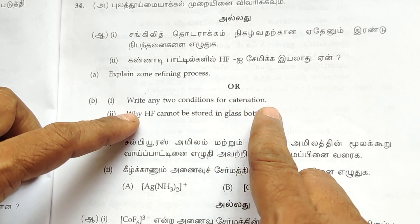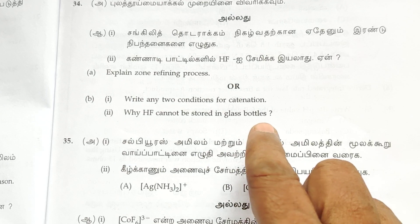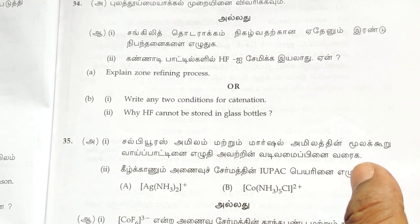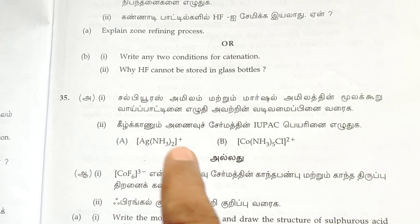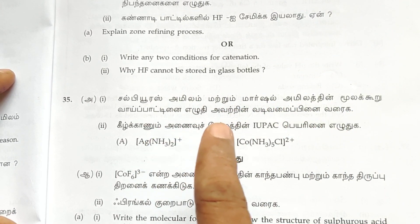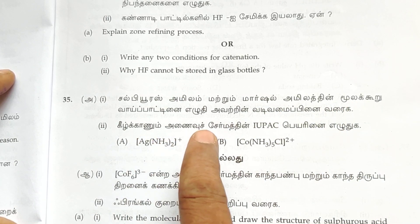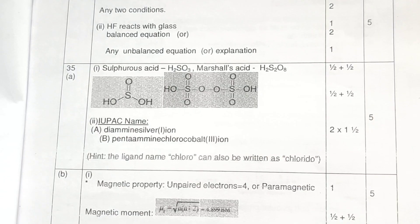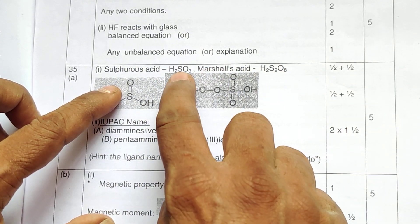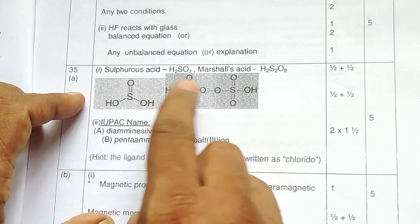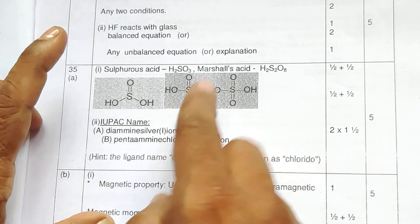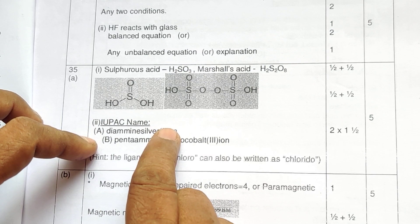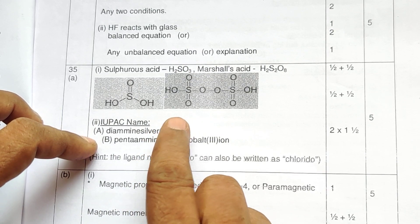Write any two conditions of catenation — the topic 'why HF cannot be stored in glass bottles' is deleted. Write two conditions of catenation for two marks. Sulfurous acid or Marshall's acid — IUPAC name — is also tested. Write the acid formula, structure, and IUPAC name correctly for two marks.